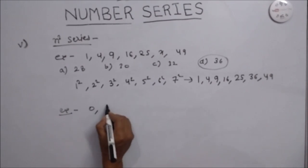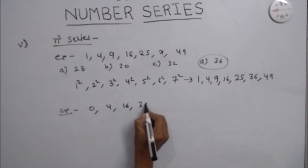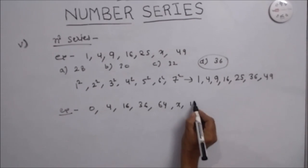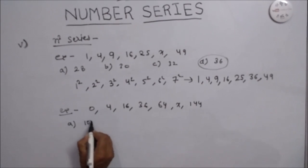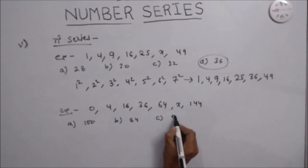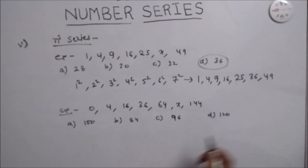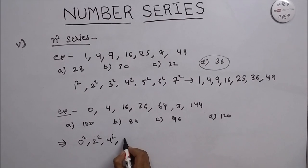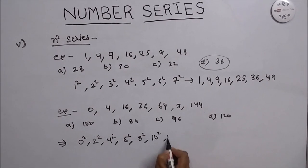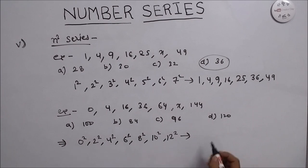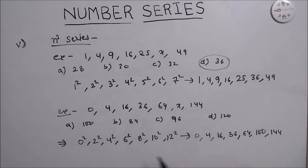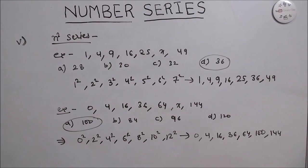One more example to understand N-square series: 0, 4, 16, 36, 64, X, and 144. Options are 100, 84, 36, 96, and 120. This series follows 0², 2², 4², 6², 8², 10², 12², giving us 0, 4, 16, 36, 64, 100, 144. The answer is 100. Thank you for watching this video. Please subscribe to our channel for more videos.